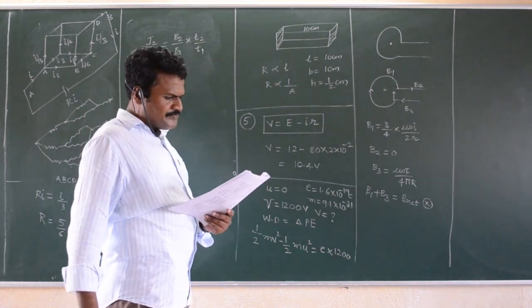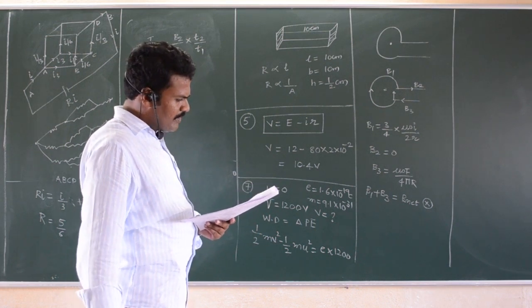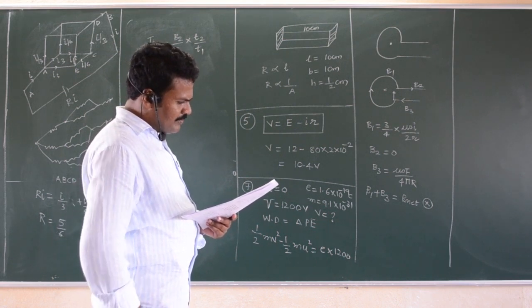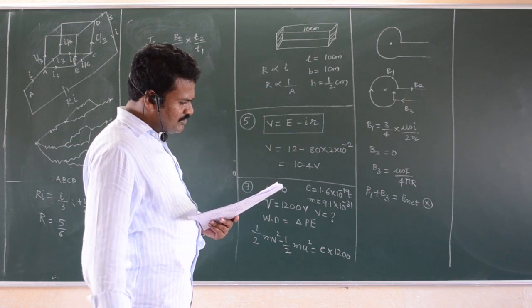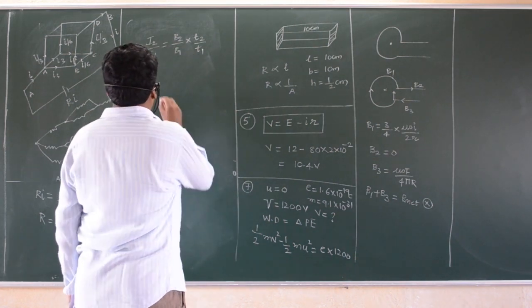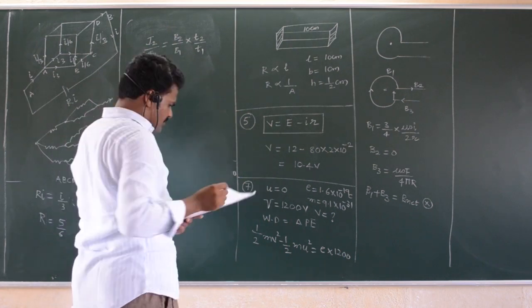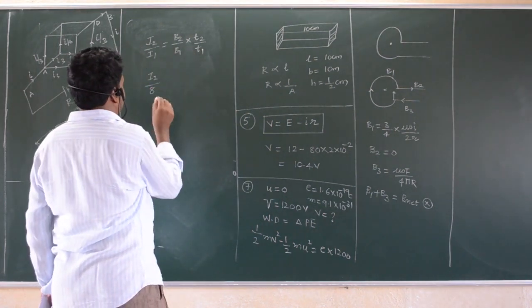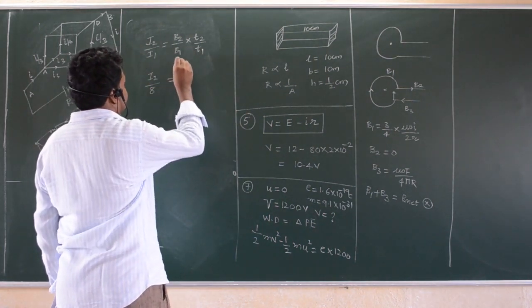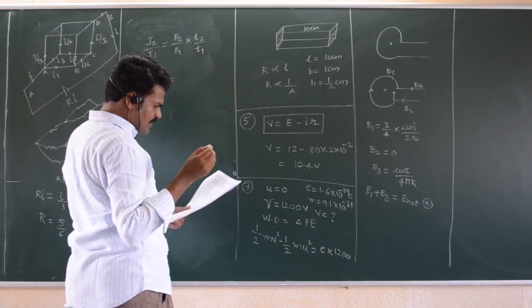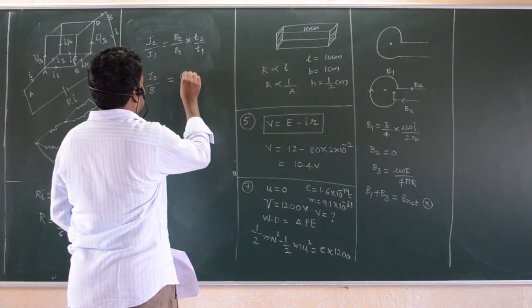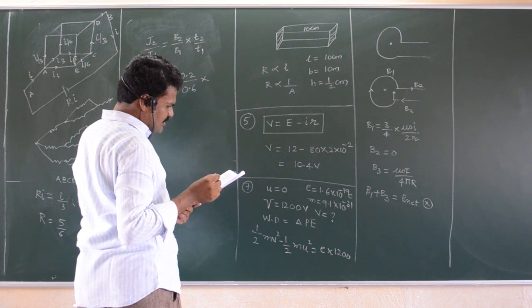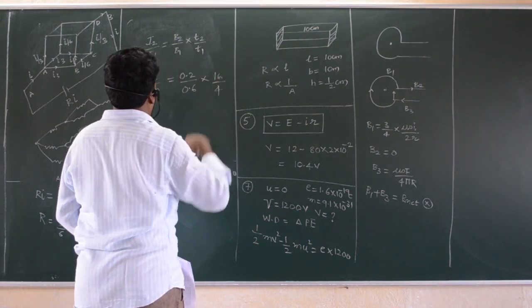Temperatures are given as 4K and 16K, and he is asking for I2. I1 is given as 8, B1 is given as 0.6, and B2 is given as 0.2. Just substitute: I1 is 8, B2 by B1 is 0.2 by 0.6, and T2 by T1 is 16 by 4. Substitute and you will get I2.